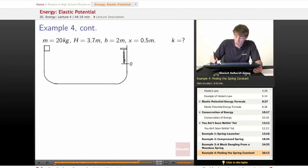So we know that our mass is equal to 20 kilograms. The height that it starts at is 3.7 meters. The height that the bottom of the spring is at is 2 meters. And the x that it gets compressed is 0.5 meters. And now we want to know what is the k involved.